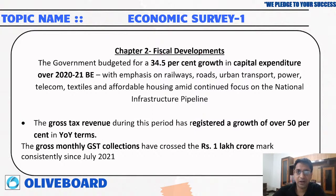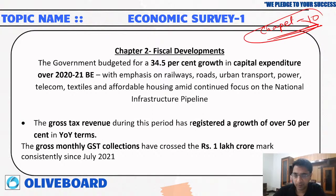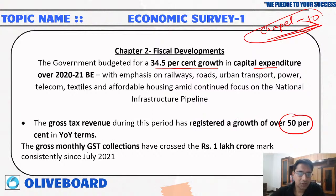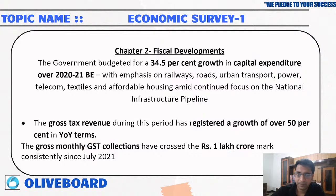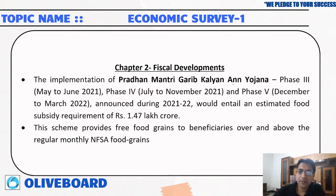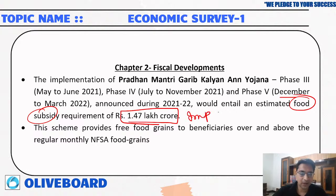Chapter 2 covers fiscal development. We have to go from Chapter 2 to Chapter 10. The government budget saw a 34.5 percent increase in capital expenditure over the budget estimate. Gross tax revenue registered a growth of over 50 percent. Gross monthly GST collections have crossed rupees 1 lakh crore since July. Pradhan Mantri Garib Kalyan Anna Yojana Phase 3 ran from May to June, Phase 4 from July to November, and Phase 5 from December to March, with a food subsidy of rupees 1.47 lakh crore.